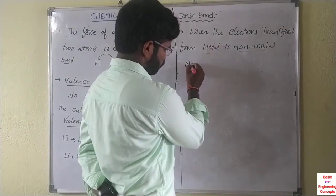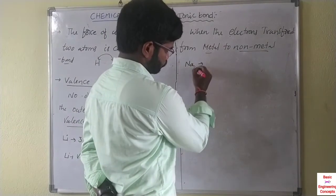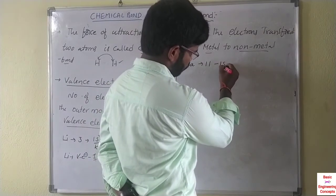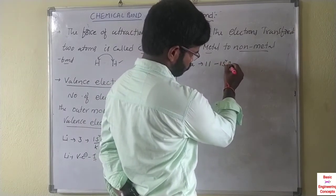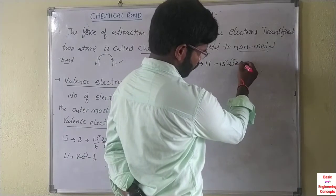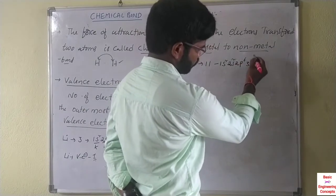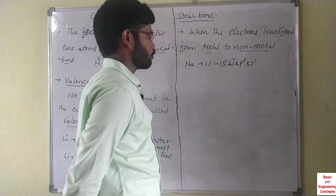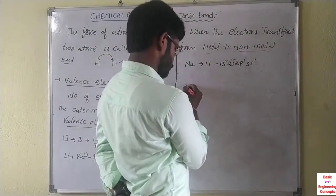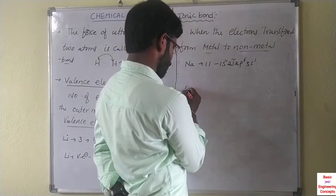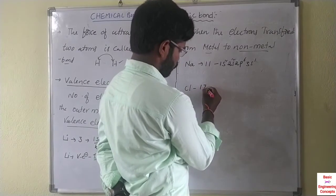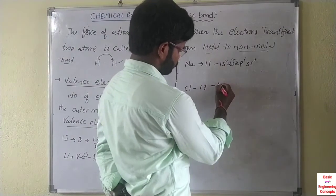For example, metals: we can take sodium, its atomic number is 11, electronic configuration is 1s2 2s2 2p6 3s1. For non-metal, we can take Cl, chlorine, with atomic number 17.